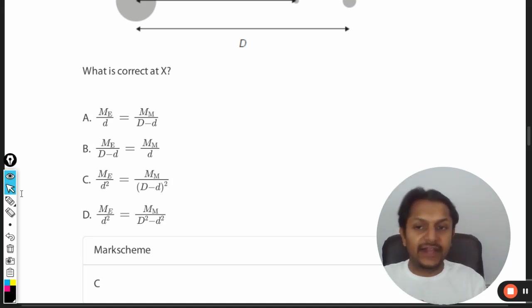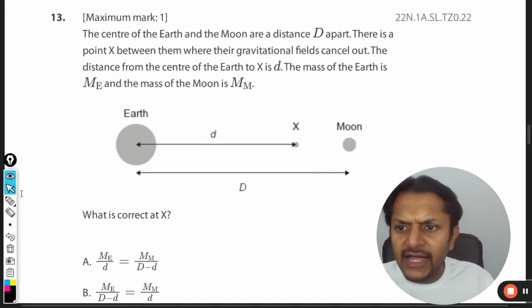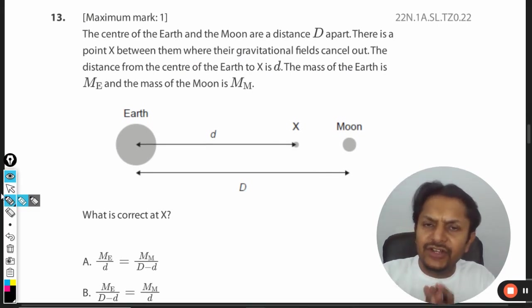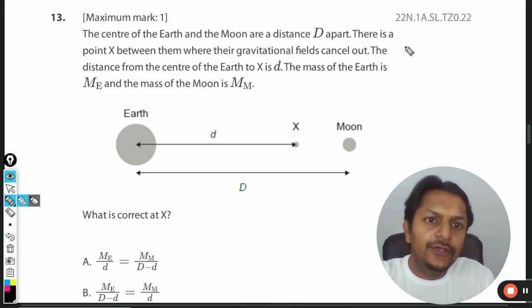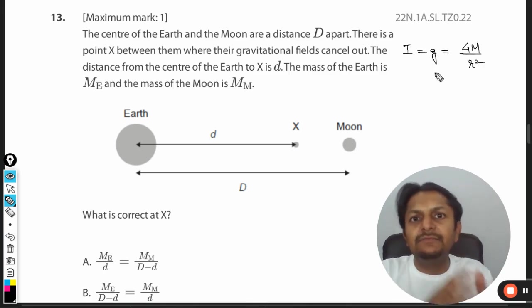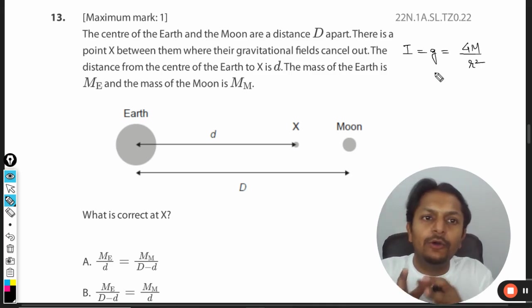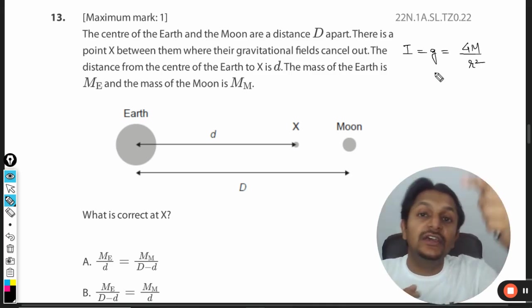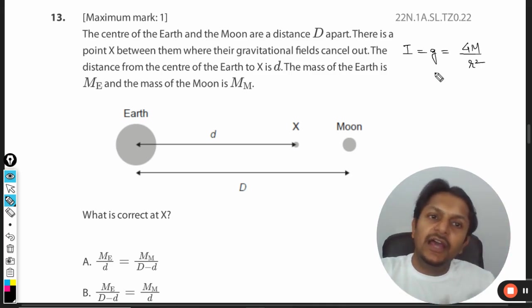It's a very simple question. If you know the formula for the gravitational field intensity or gravitational field strength, you can call it I or write it with g. The formula is GM divided by r squared, where capital M is the mass of the planet you're talking about and r is the distance of the point from the center of the planet.